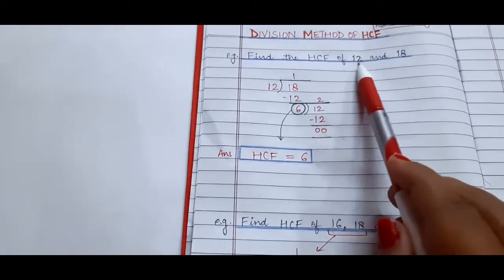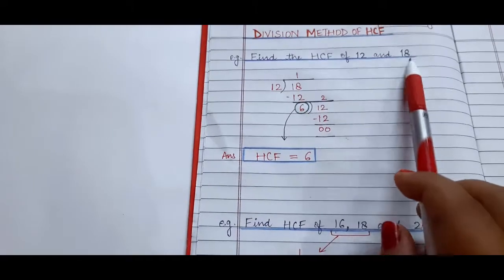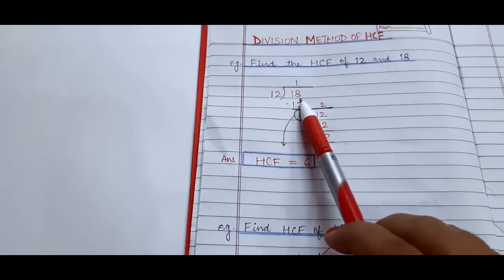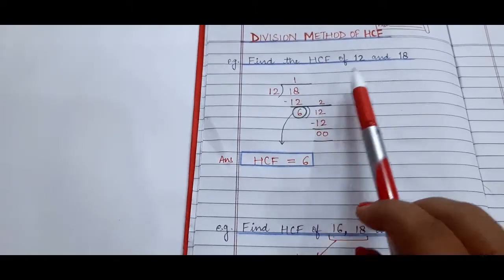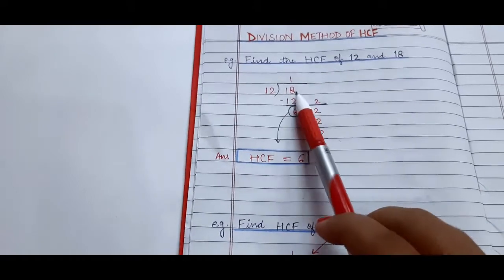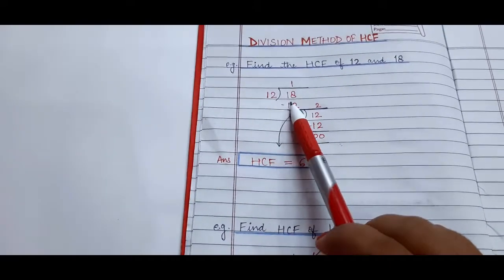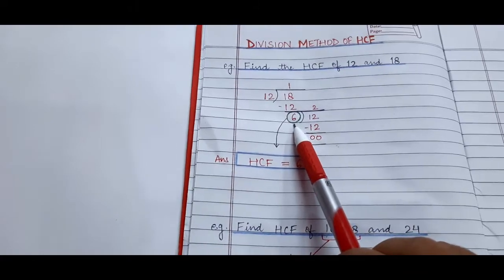First, we will write the smaller number here and the bigger number here. It means we will divide the bigger number by the smaller number in this way. 12 ones are 12, remainder is 6.